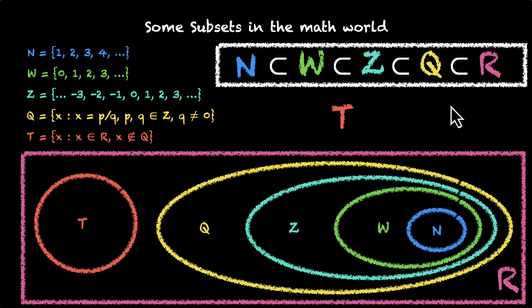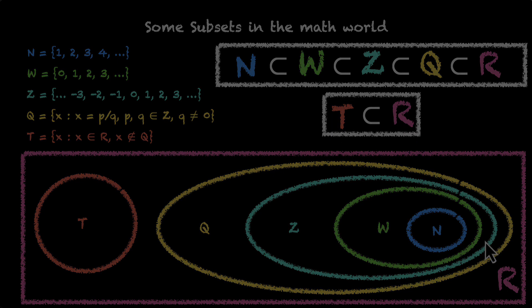But where is T? Well, T is a subset of real numbers. That's all that we can say. T is subset of real numbers. T unfortunately has nothing to do with all the other sets.